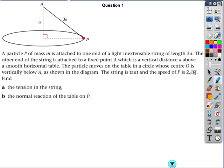We have a particle P of mass M attached to one end of a light, inextensible string of length 3a, just like with a conical pendulum. The other end is attached to a fixed point A, which is a vertical distance a above a smooth horizontal table. Now here's the point where it starts to be a little bit different. Normally with a conical pendulum question, it's not actually lying on a table, it's just rotating round by itself.